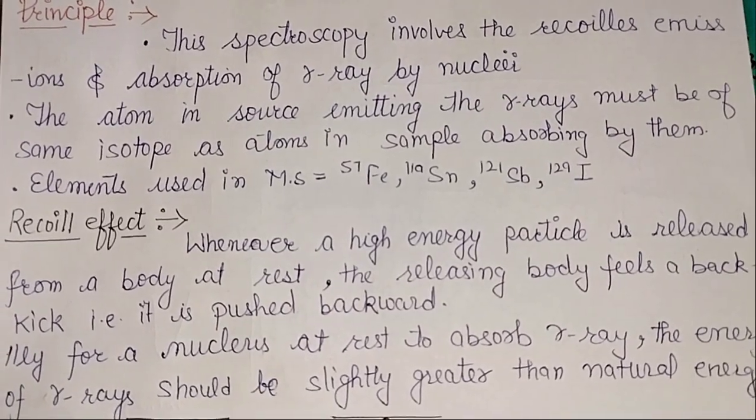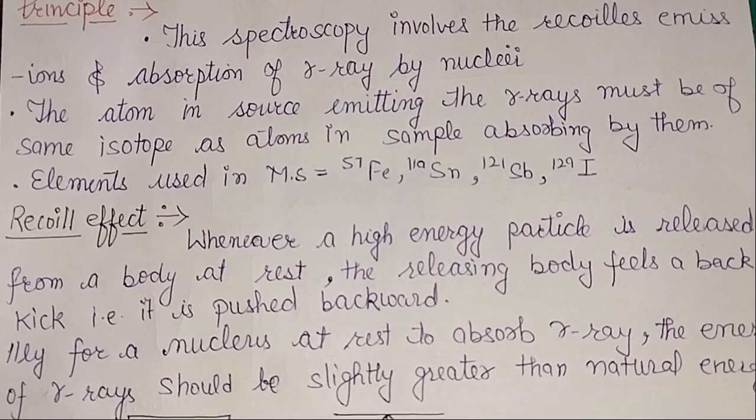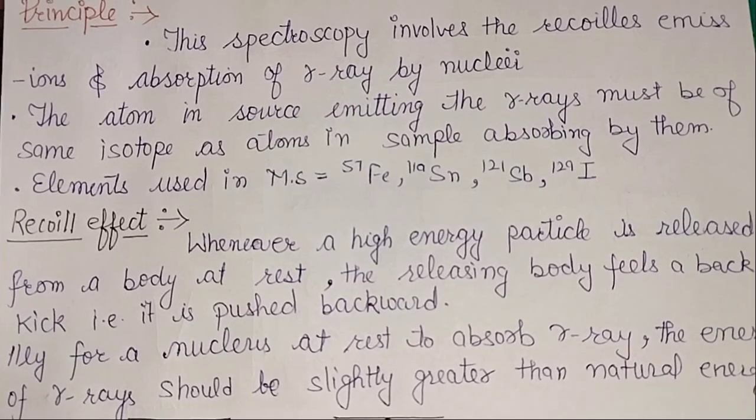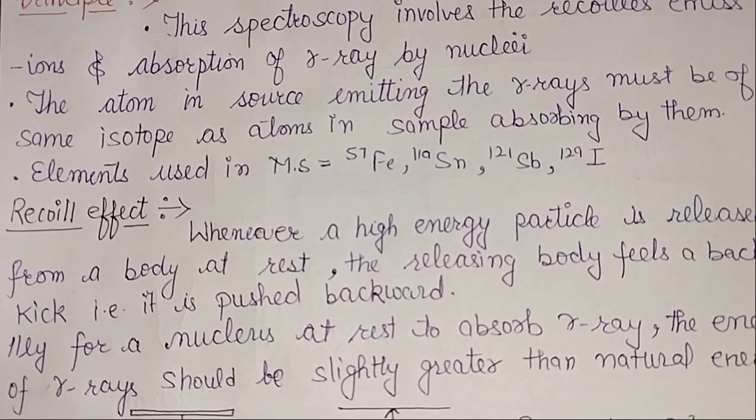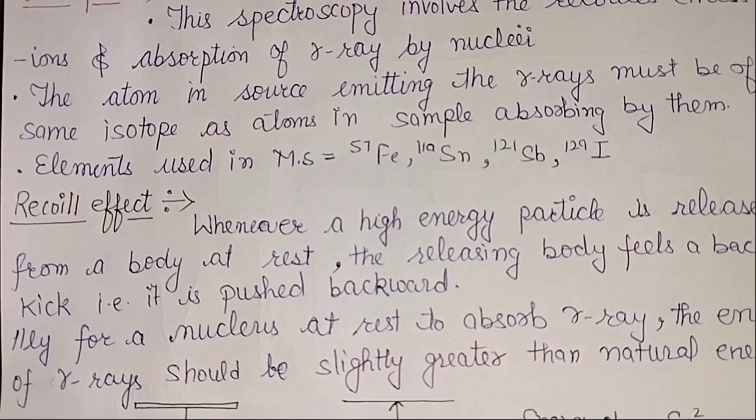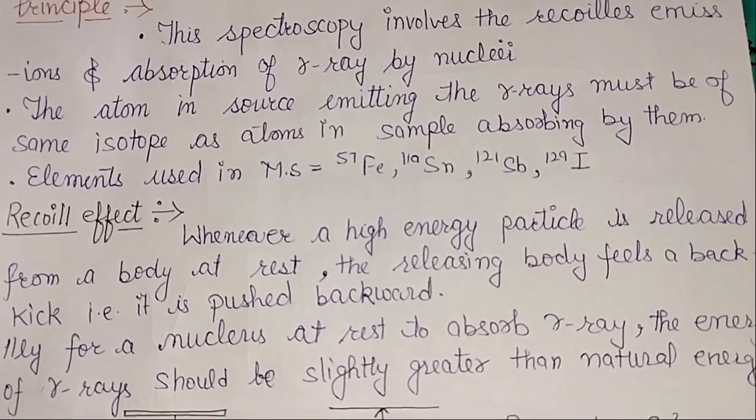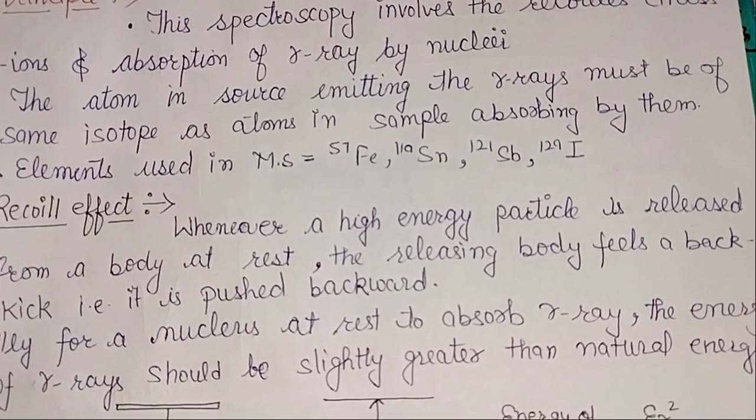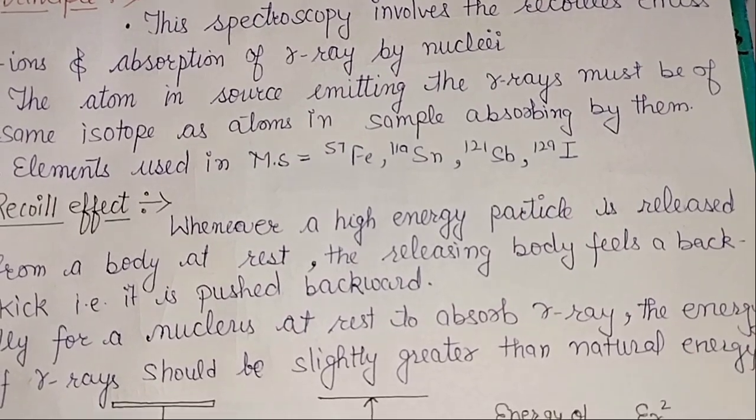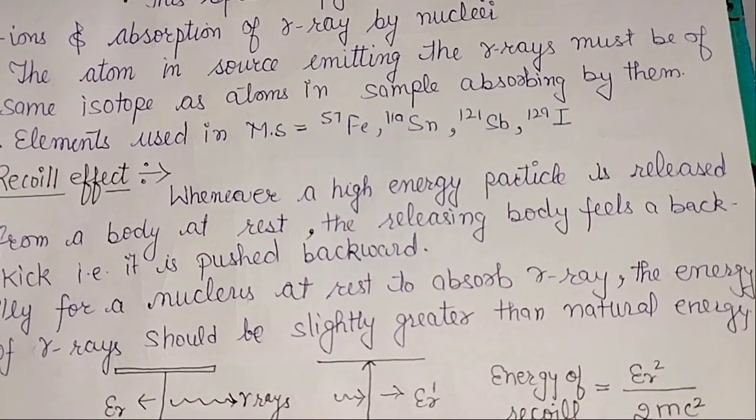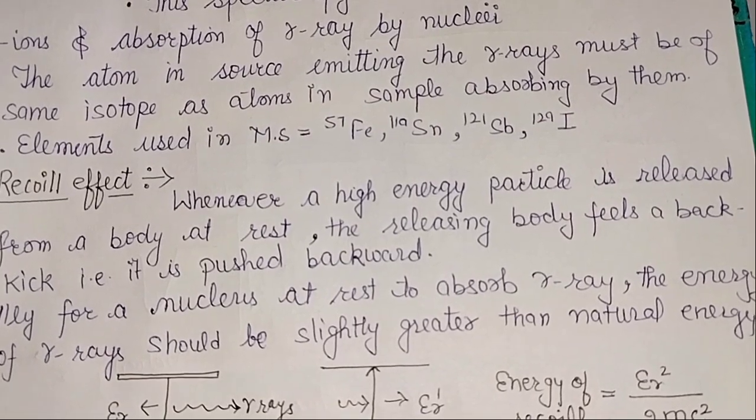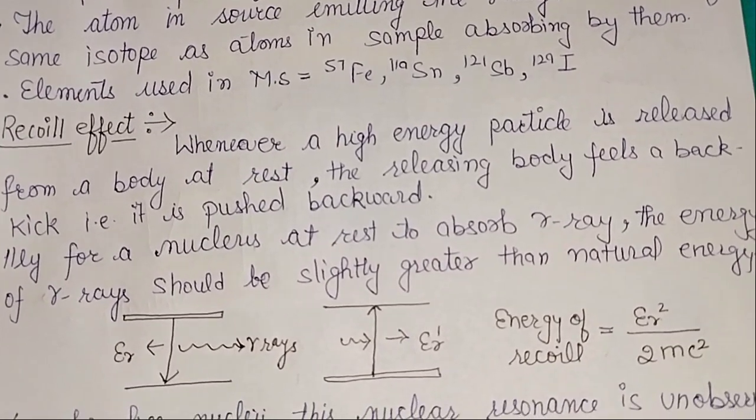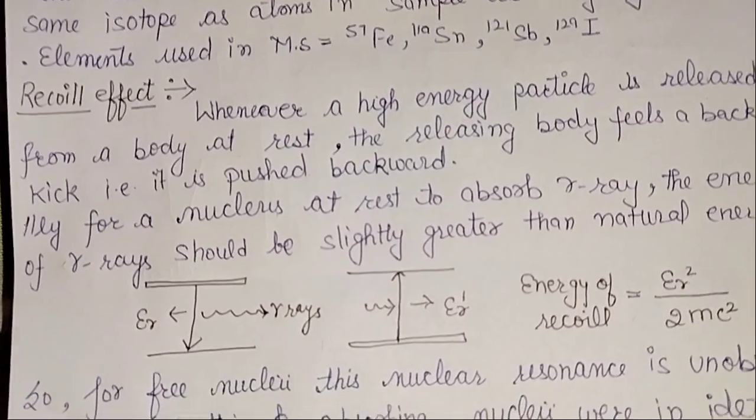The atom in source emitting the gamma rays must be of the same isotope as the atom in sample absorbing them. The main elements used are iron, tin, lead, and others. But the most important element in Mossbauer spectroscopy is iron-57, which we will discuss further.